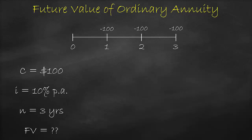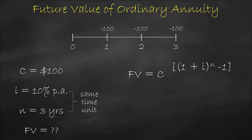Please note that in all time value of money questions, the interest rate and the number of periods must have the same time unit. This means if the interest rate is annual, we should express the number of periods in years. The future value formula is: cash flow multiplied by, open bracket, open second bracket, one plus the interest rate, close second bracket, to the power of the number of periods, minus one, close first bracket, all divided by the interest rate.